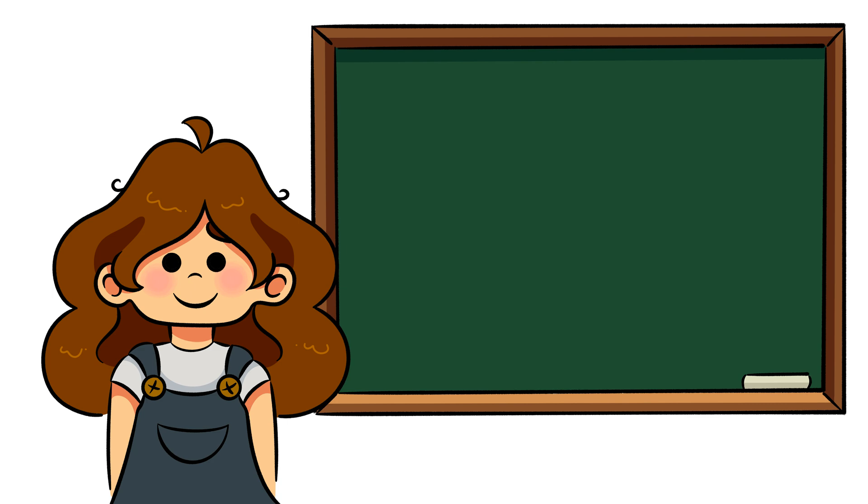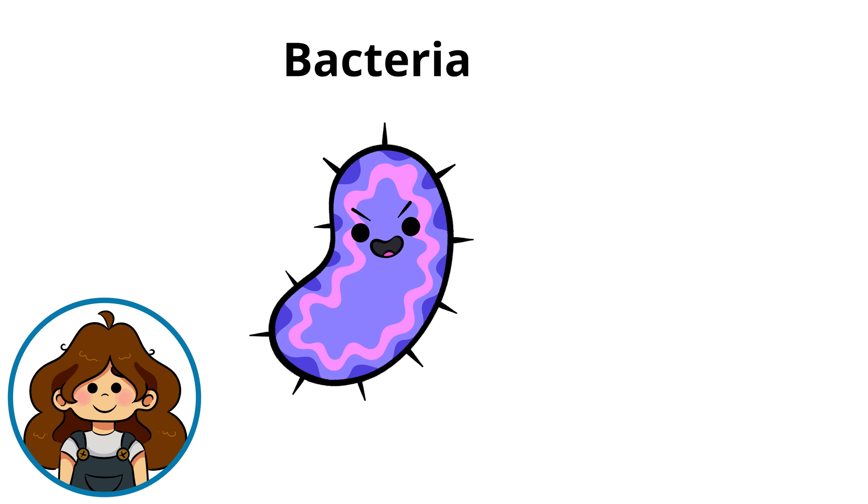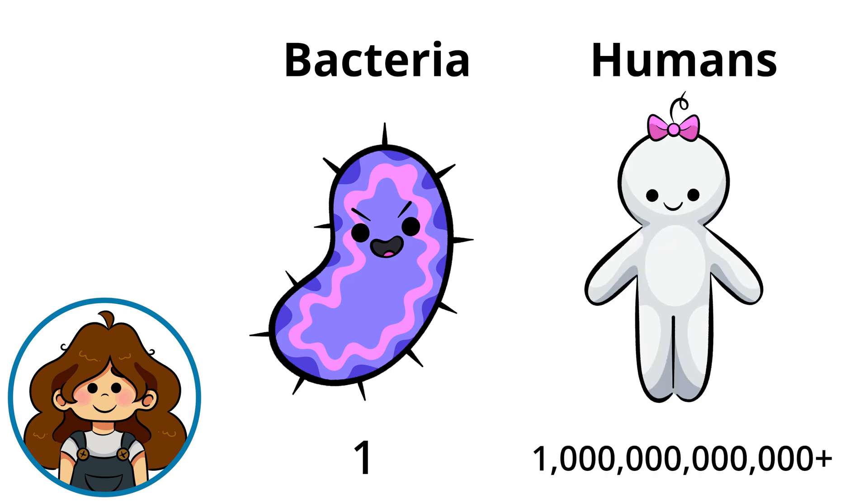Let's kick things off with a quick overview of cells. A cell is the most basic component of all living things, no matter how big or small. For instance, some organisms like bacteria are made up of just one cell, while us humans are made up of trillions of cells.